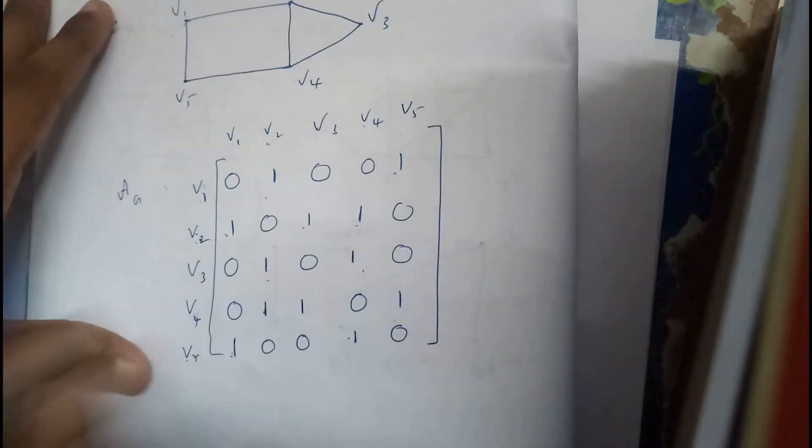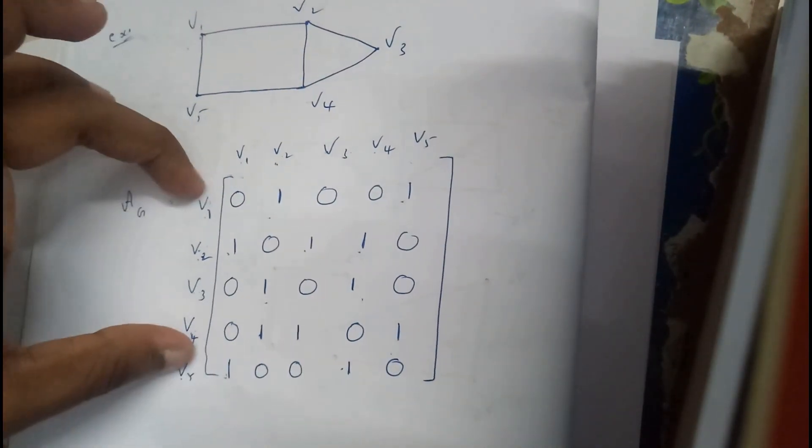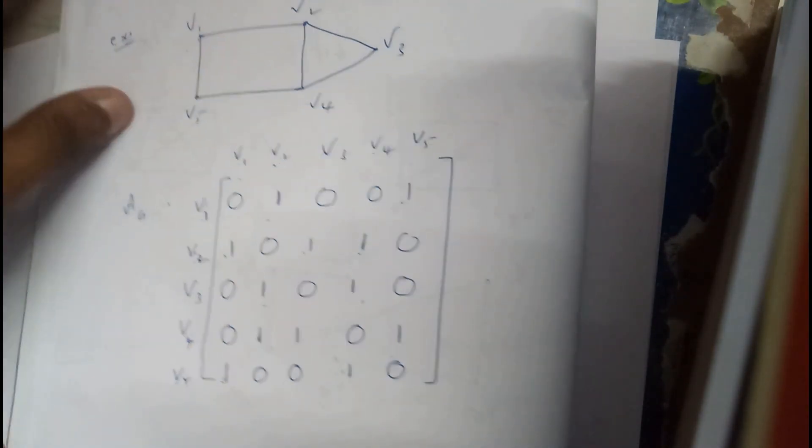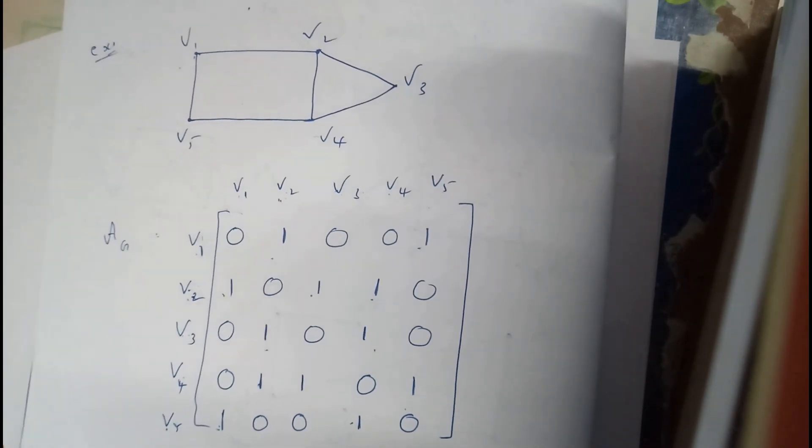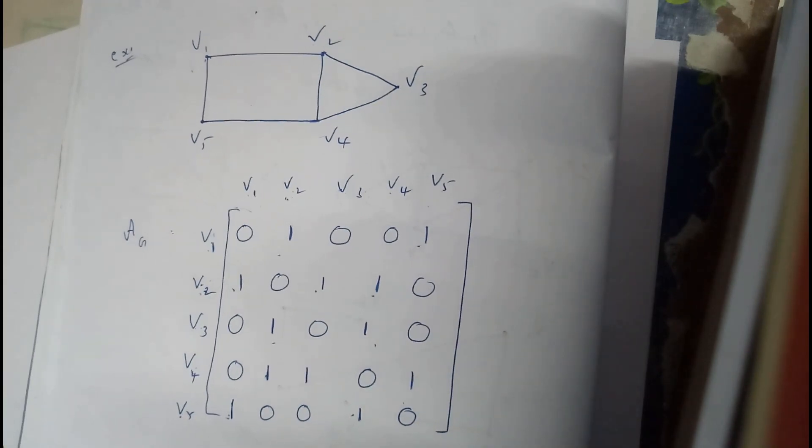And rest of all the places will be zeros, such that you will be obtaining this graph's matrix. And they may also give you the matrix and they may also ask you to draw the graph. So be clear in this topic. This is one of the main topics in which the next topic fusion will be included.